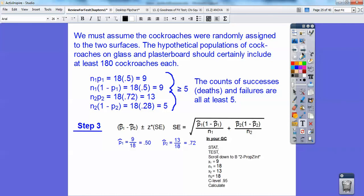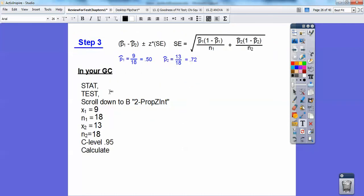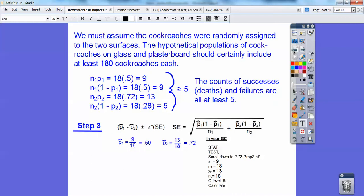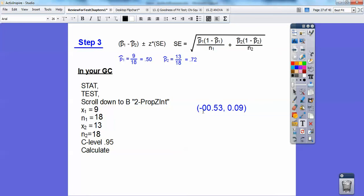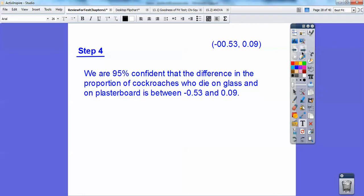Or you can go ahead and use your graphing calculator. So in your graphing calculator, you do stat test, scroll down to two proportion Z interval, which in my calculator is B, and then plug in X1 is 9, N1 is 18, X2 is 13, N2 is 18. And I think we were doing a 95%. So then plug in your 95% and calculate. And so we get that interval right there. So I'm going to say that we're 95% confident that the difference in the proportion of cockroaches who die either on glass or plasterboard is between a negative 0.53 and a positive 0.09.